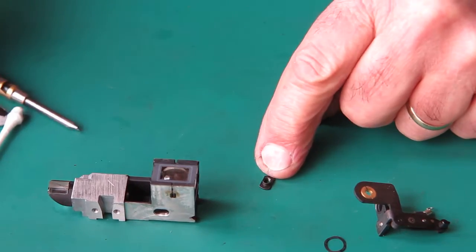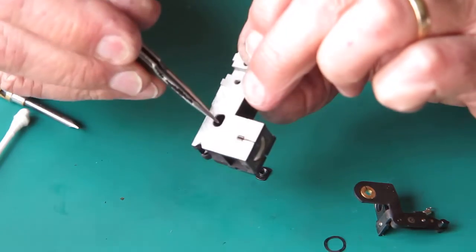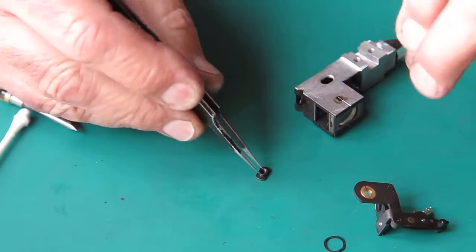This little piece here is the bush that the screw screws into. It runs in the slot in the base here, so it's adjustable for position.